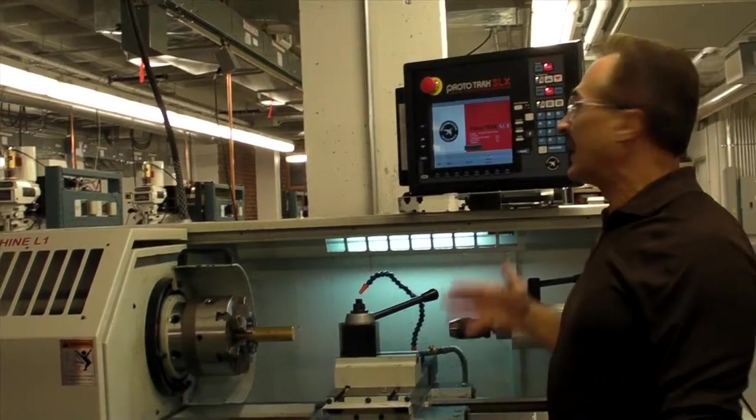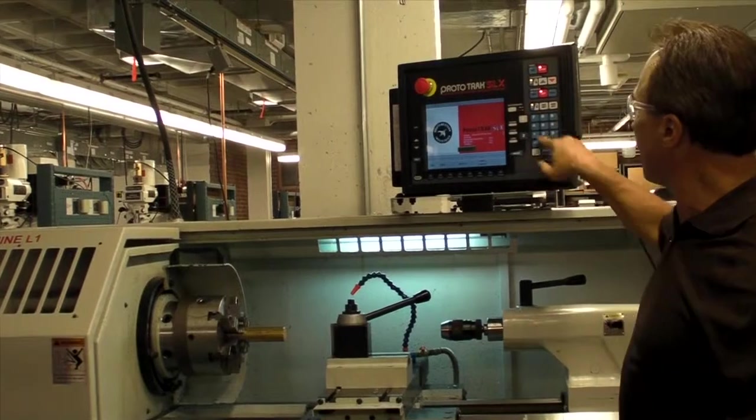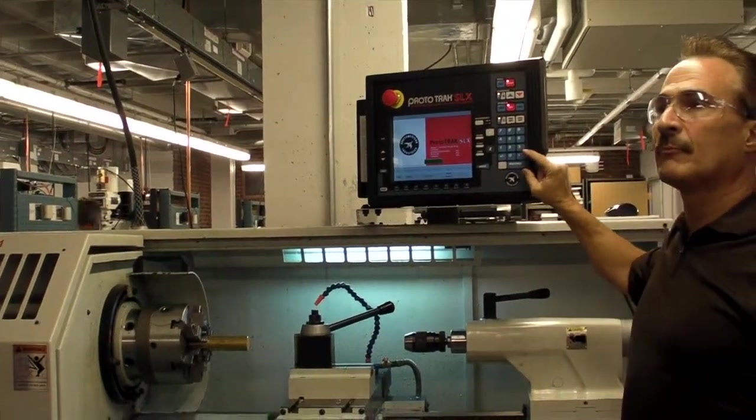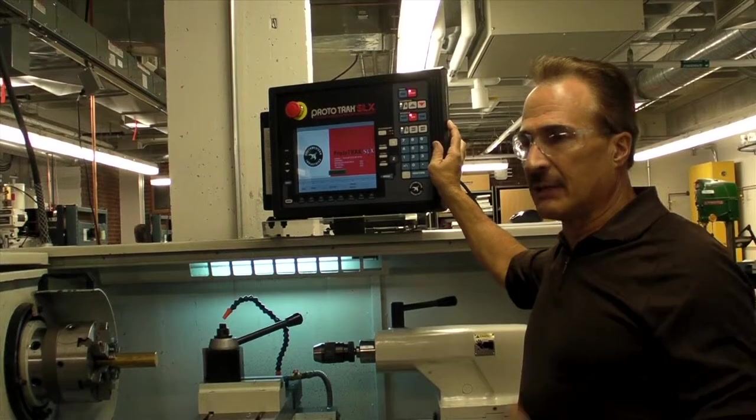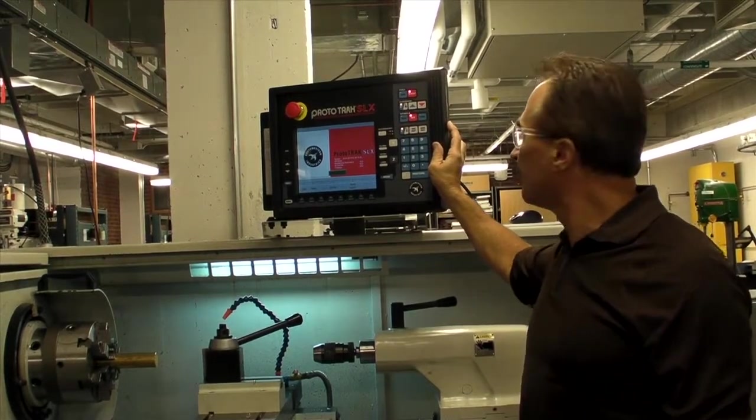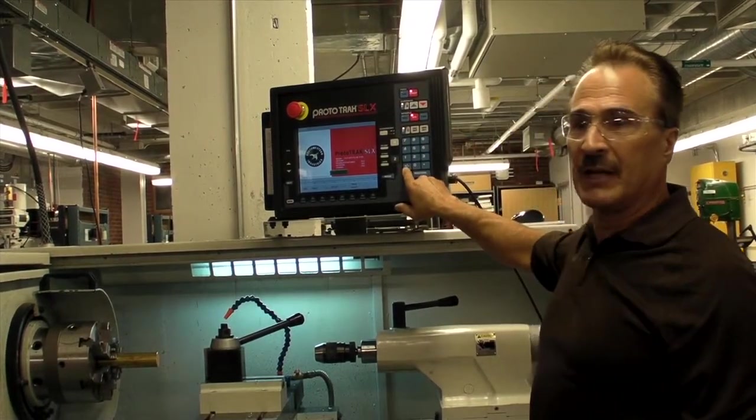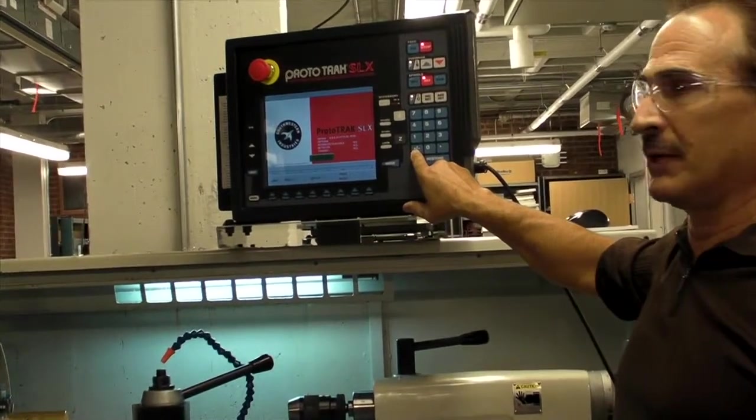So a little description of the keys over here. Regular camera keypad. When you enter dimensional information, everything defaults to positive. You have a negative key here that you can enter a negative dimension if you need to do that.